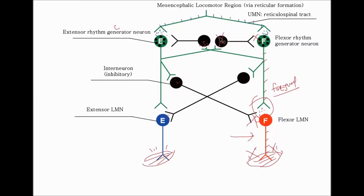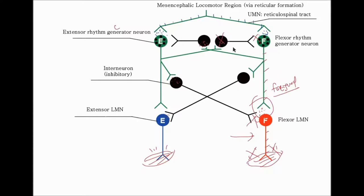In conclusion, whenever there is a tonic input, initially you'll see no contraction of either muscle, but soon they will find a pattern of alternating contraction — extensor, then flexor, then extensor, and so forth. You'll never see co-contraction of both muscles due to the mutual inhibitory mechanisms shown in this diagram. That's how the CPG module works in conjunction with the tonic descending inputs from the brainstem.